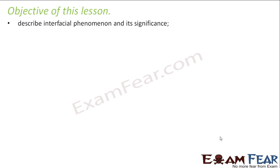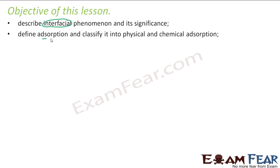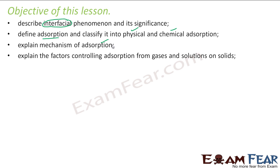The objective of this lesson is to describe the interfacial phenomena and its significance. We'll talk about the interfacial phenomena that happens on the surface. We'll define the term adsorption and classify it into two parts: physical and chemical adsorption. We'll also explain the mechanism of adsorption and the factors that control adsorption, focusing only on adsorption from gases on solids and solution on solids.